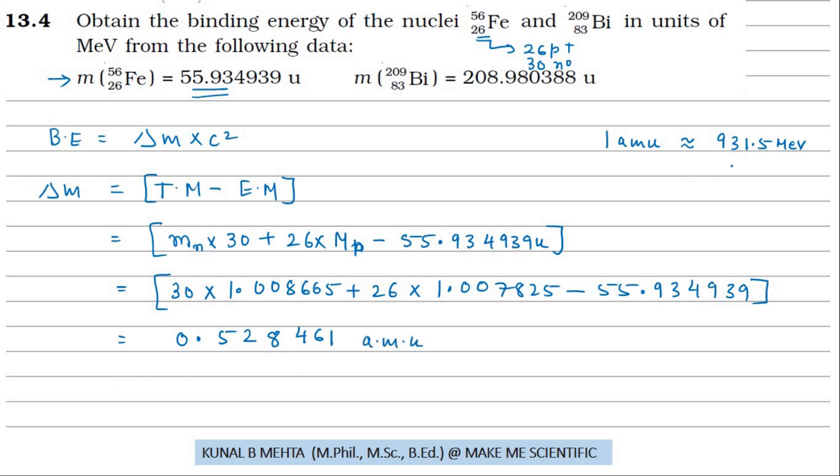Now, we know that 1 amu equals this much energy. So the binding energy is 0.528461 multiplied by 931.5. This answer turns out to be 492.26 MeV. This is the answer to our problem.